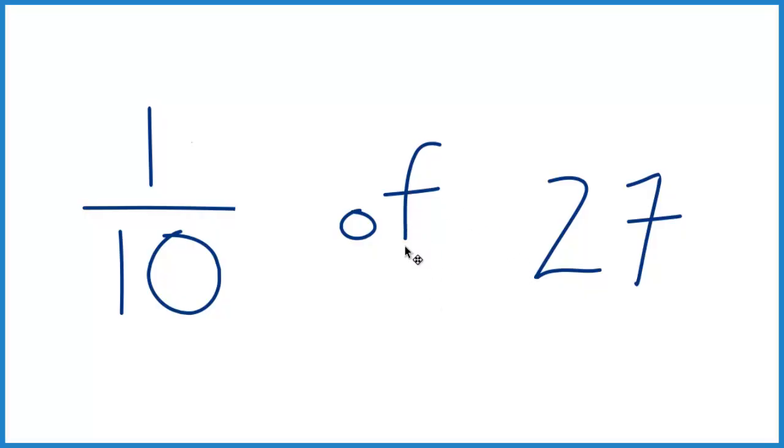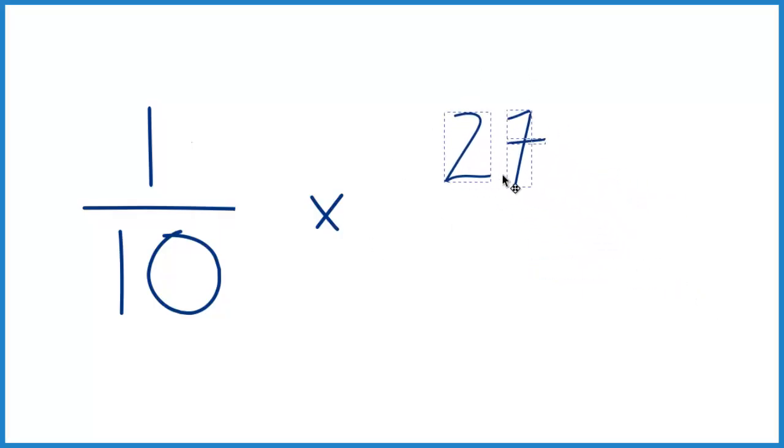Instead of of, we're just gonna multiply. Then for the 27, let's make that 27 over 1, because 27 divided by 1 is still 27, but now the numerators and the denominators, they line up.